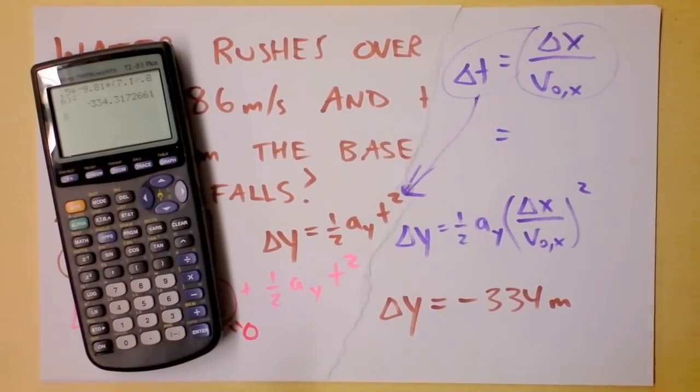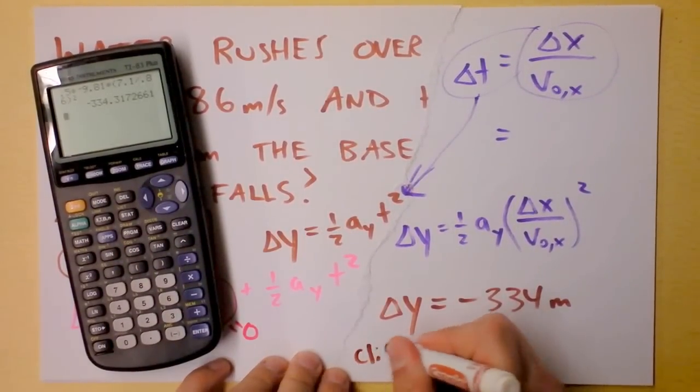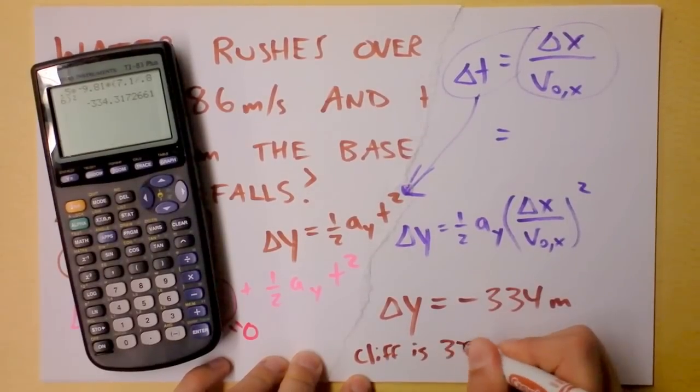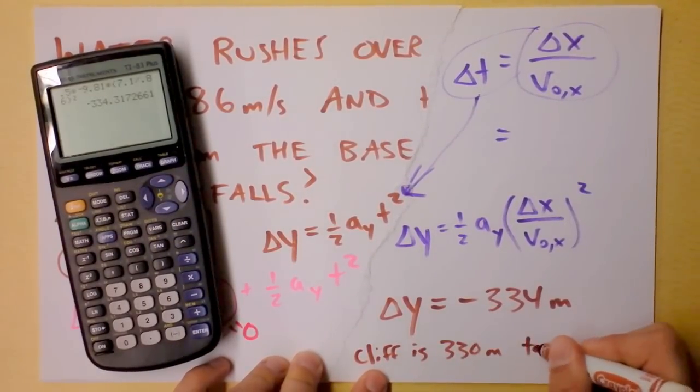Whoa! But we only want two sig figs and we want the positive answer so I write cliff is 330 meters tall.